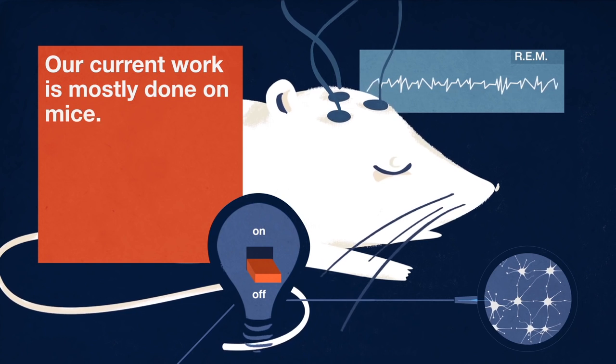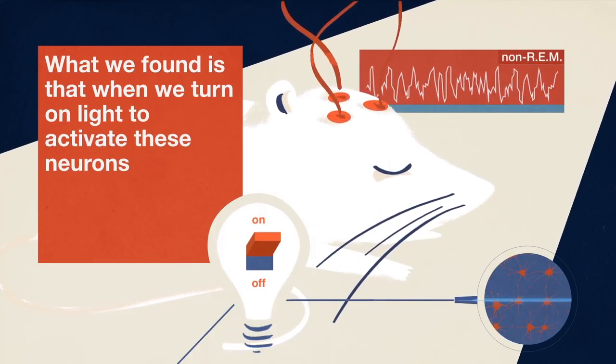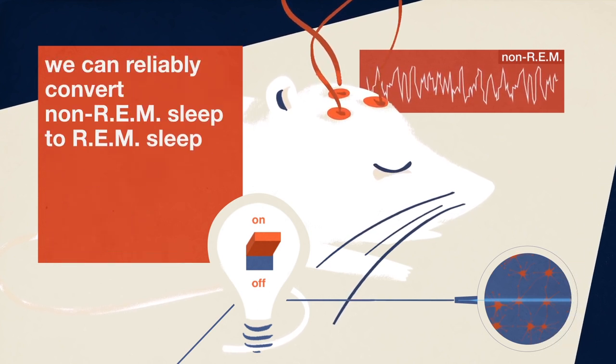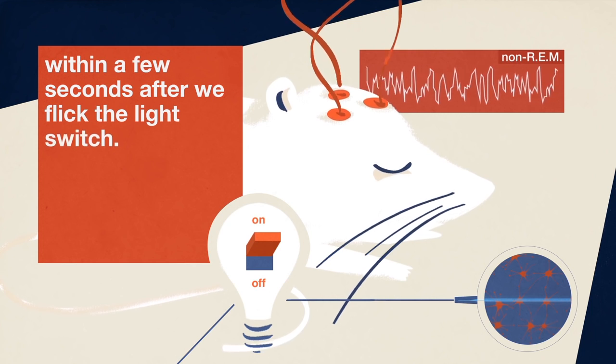Our current work is mostly done in the mouse. What we found is that when we turn on light to activate these neurons, we can reliably convert non-REM sleep to REM sleep within a few seconds after we flip the light switch.